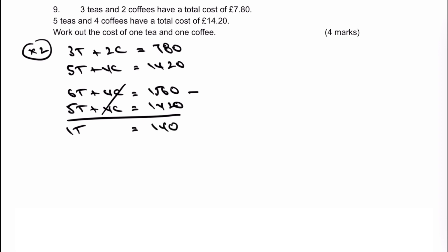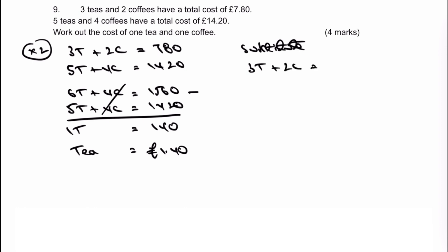So therefore I know the price of one cup of tea is going to be £1.40. Then it's just a case of substituting that value into one of the equations — it doesn't matter which one we choose. I'm just going to choose the top one, which is 3T plus 2C equals 780.